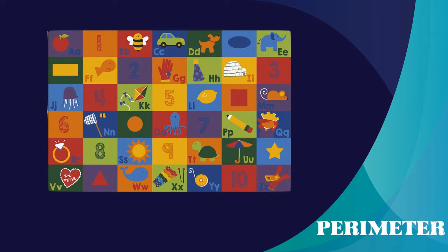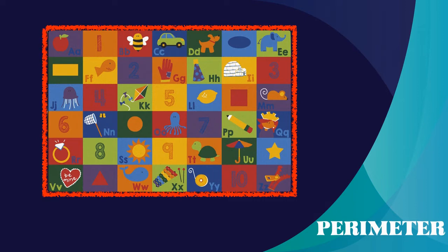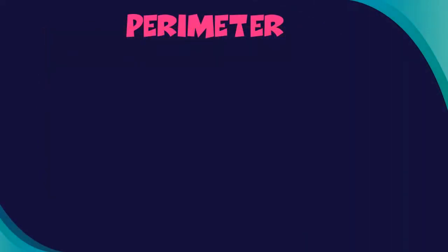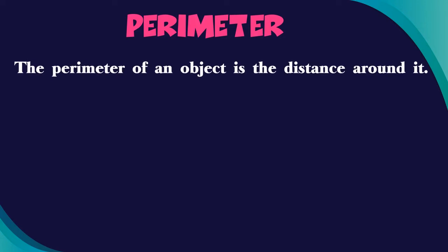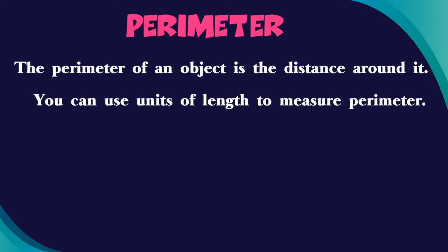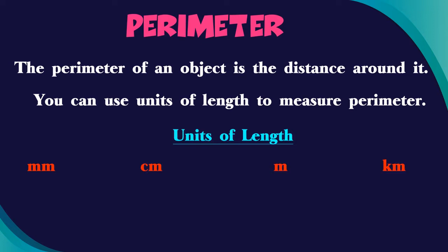Have you ever seen a rug in the middle of the floor and wondered what's the distance around that rug? Well, if that came into your mind, then you are thinking about perimeter. The perimeter of an object is the distance around it. You can use units of length to measure perimeter — millimeters, centimeters, meters, kilometers, inches, feet, yards, and miles.